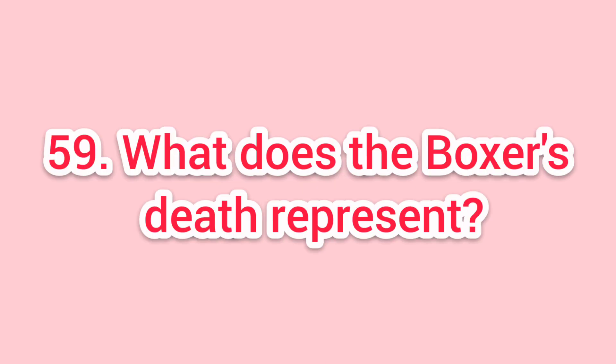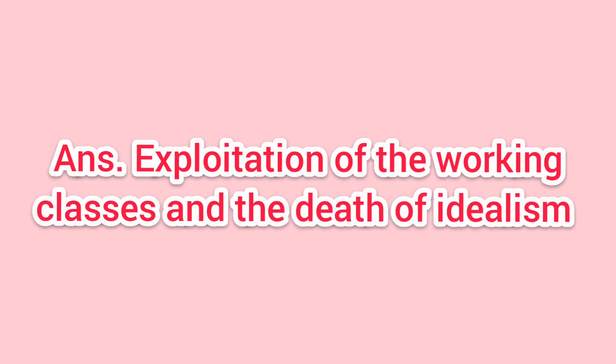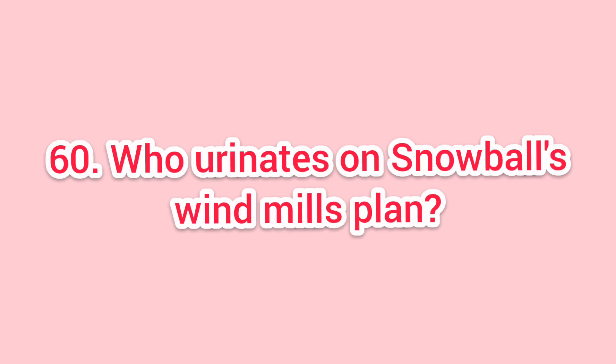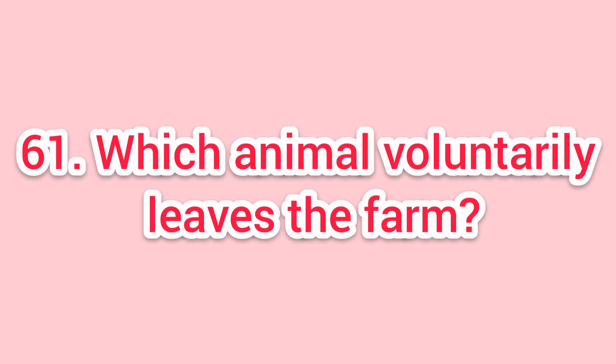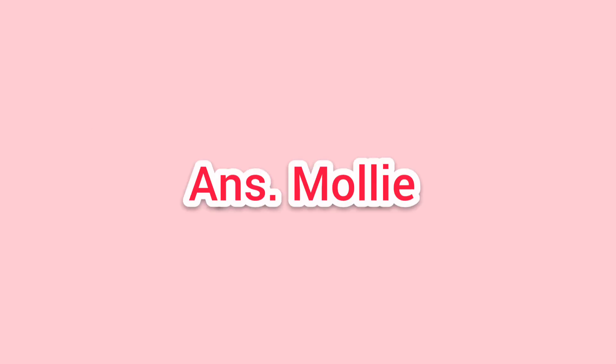Fifty-nine: what does Boxer's death represent? Answer: exploitation of the working classes and the death of idealism. Sixtieth: who urinates on Snowball's windmill plan? Answer: Napoleon. Sixty-one: which animal voluntarily leaves the farm? Answer: Molly.